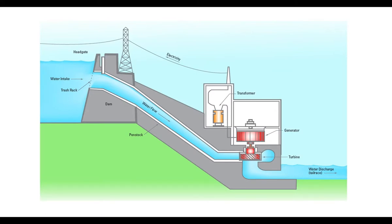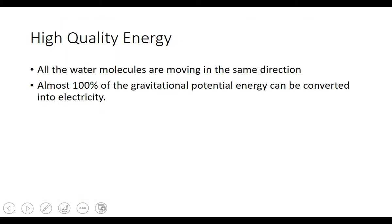Here's an image of what happens: water flows in through the top and must go through a turbine — like a big fan — which spins to let water pass through. That turbine is connected to a generator, which creates electricity. Thinking back to energy quality from a couple weeks ago, all the water molecules move in one direction, so you can convert almost 100% of your gravitational potential energy into electricity.